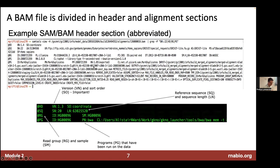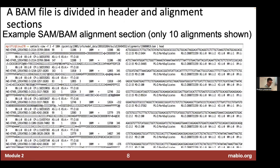We already talked about how it's divided into two sections. Looking at some example data in an example header section, you've got things like the read group ID — so you're getting sample ID and sample name. Here's an example of a program record where it tells you that BWA was run, and it can actually have details of the specific command that was run, which can be helpful. And this is a zoom in on the alignment section — an example of what 10 alignments look like.